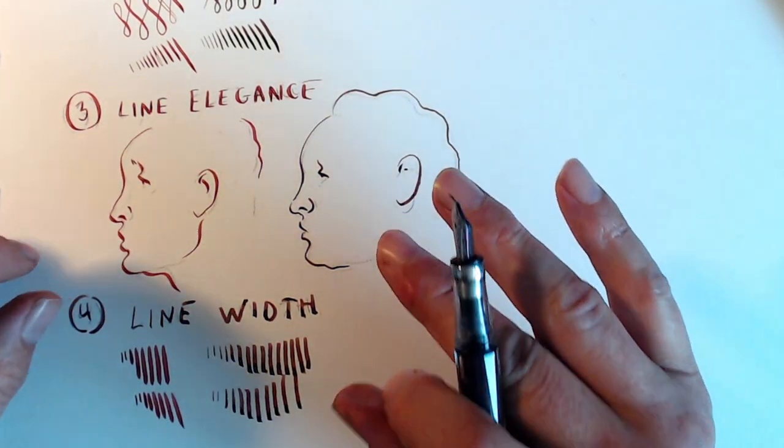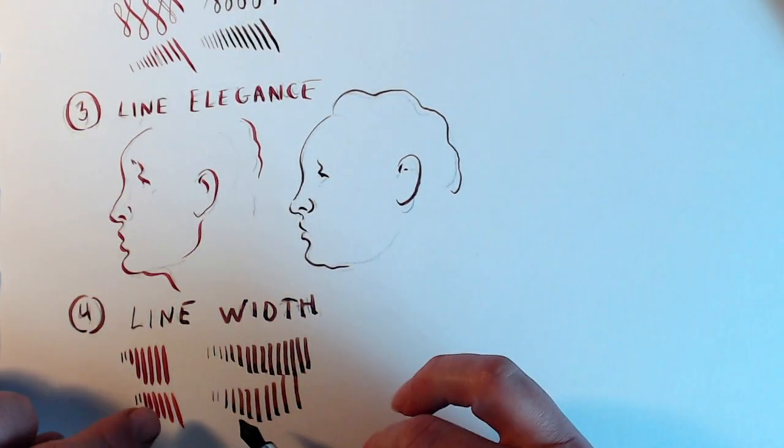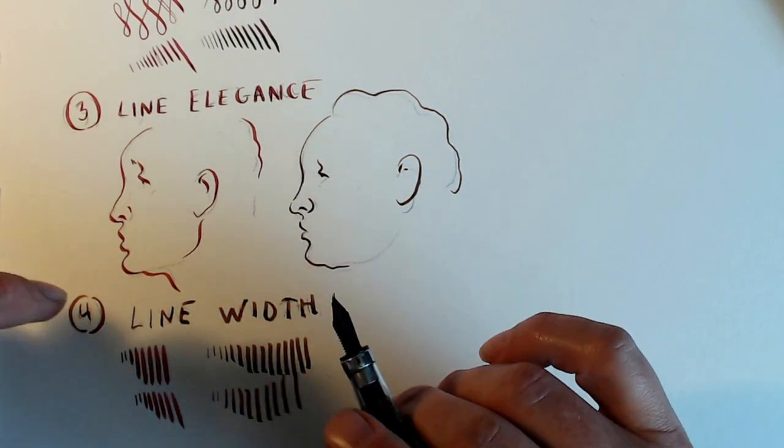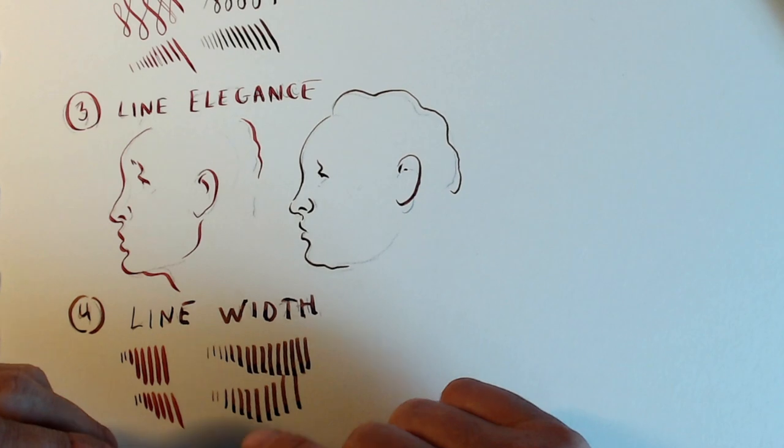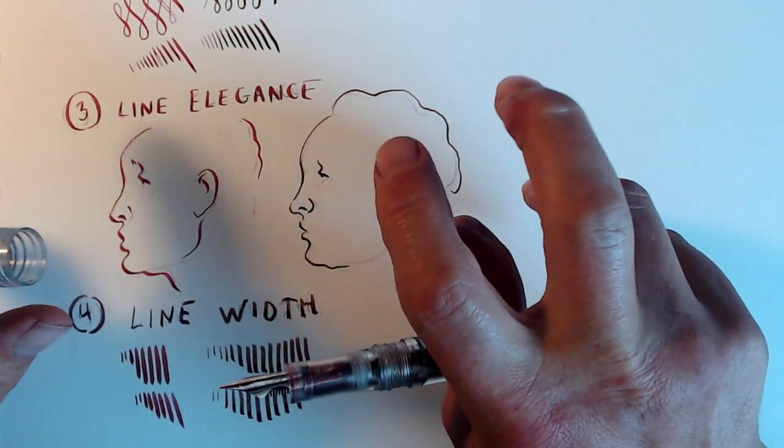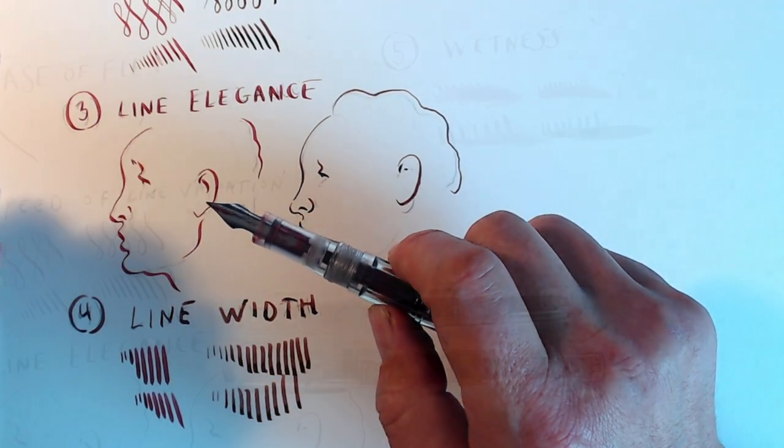So who wins here? Well, in this case, we can call it a draw or pretty close to it. But it should be noted that the FPR number 6 is the only steel Flex nib that can actually be pushed this wide. In most cases, even when up against vintage Flex wet noodles, the Fude would win outright.